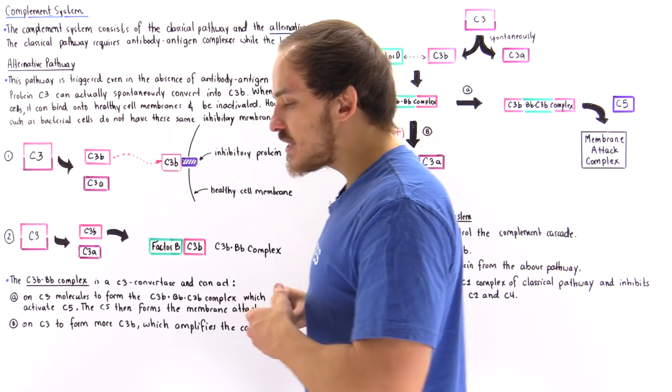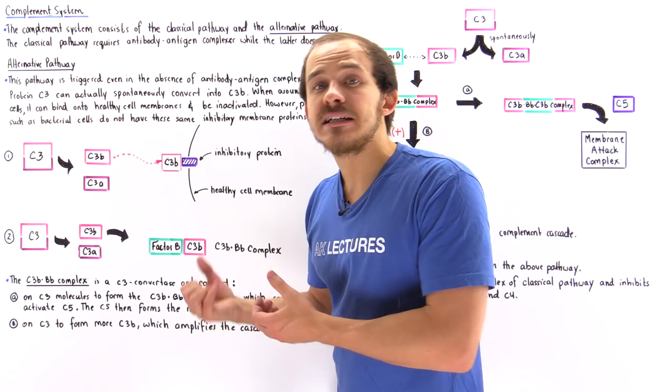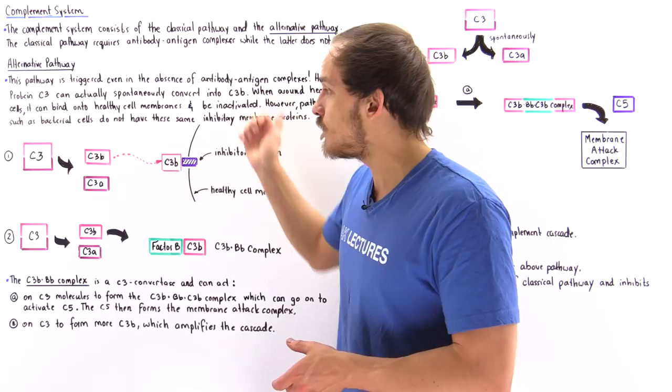Well, it turns out that one of the major proteins in the complement system, C3, does not actually need something to activate itself. It can spontaneously break down into its active form to form C3b and C3a.